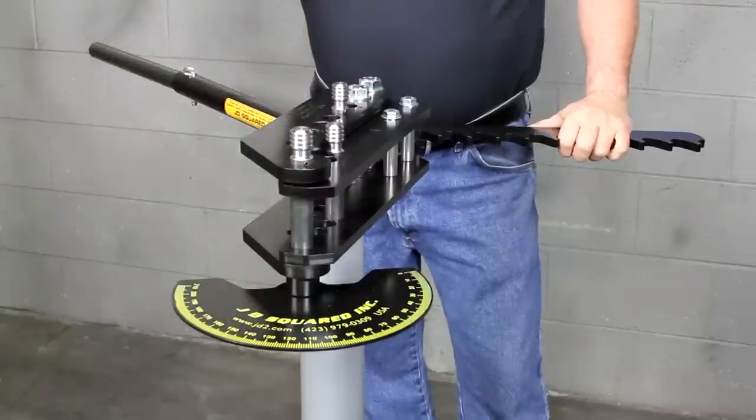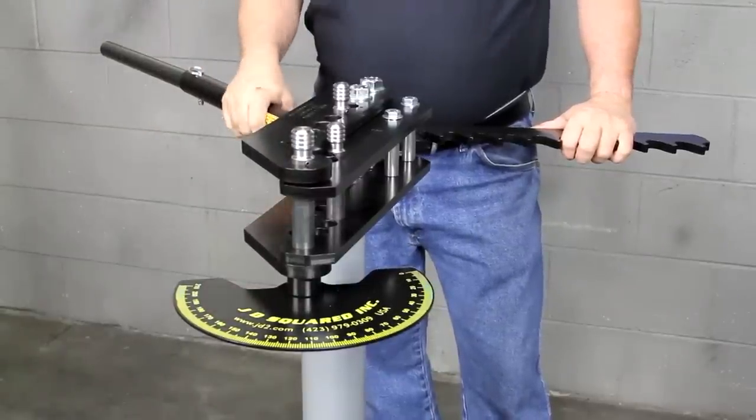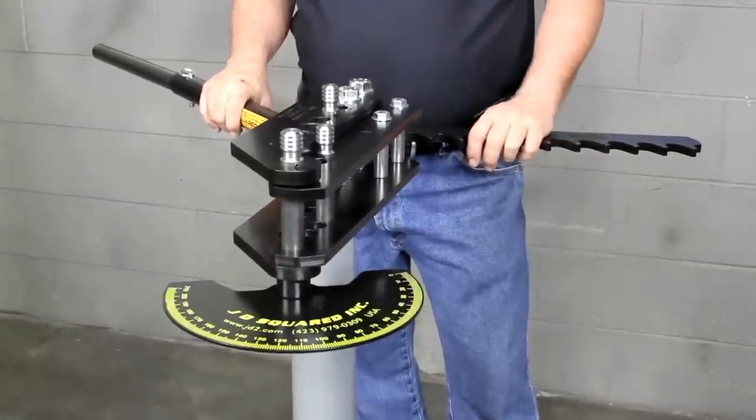What we're going to be demonstrating here is the Model 3 tube bender, which J.D. Squared originally developed back in the 80s. Could very well be the world's most popular bender, at least in the fabrication of race cars.